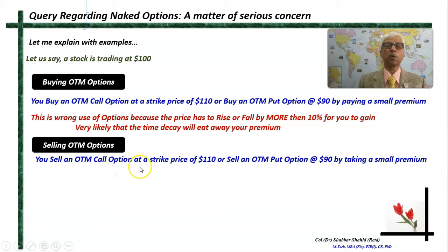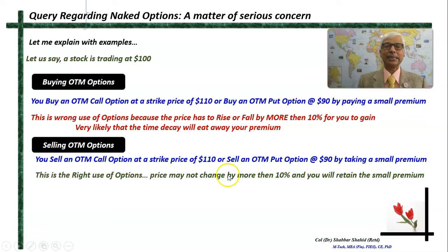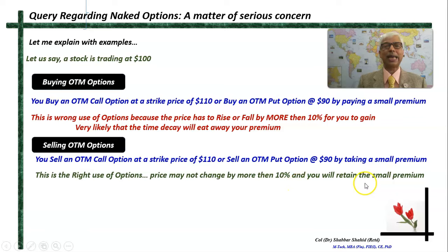Now let us consider selling. If you sell the OTM call option at strike price 110 or sell an OTM put option at 90 — here instead of paying the premium you will be taking the small premium. Wisdom-wise, this is actually the right use of options, something like hedging. The price is unlikely to change more than 10 percent within a series, and you are likely to retain that small premium.